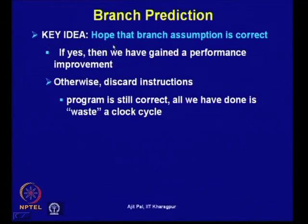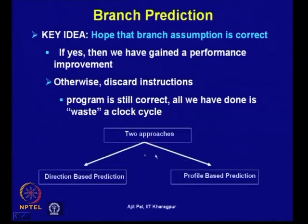The basic idea of branch prediction is the assumption that the branch prediction is correct. If yes, then we gain a performance improvement; otherwise we discard the instruction and a few cycles are wasted. There are two basic approaches: a direction-based approach used by compilers, and a profile-based approach which we shall discuss today.